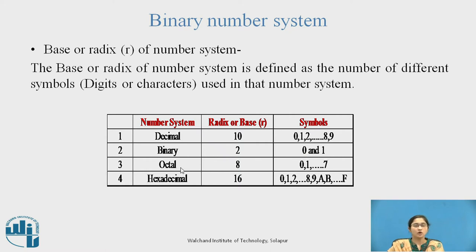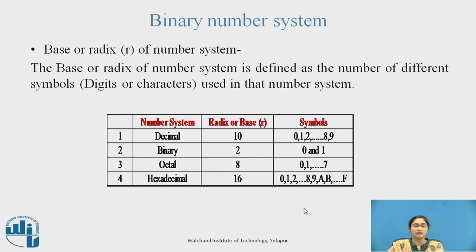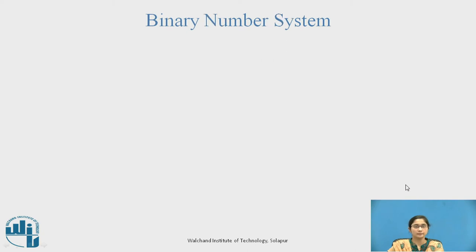In the octal number system, 8 is the base because symbols used range from 0 to 7. In the hexadecimal number system, the base is 16 because digits 0 to 9 and characters A to F are used in that number system.